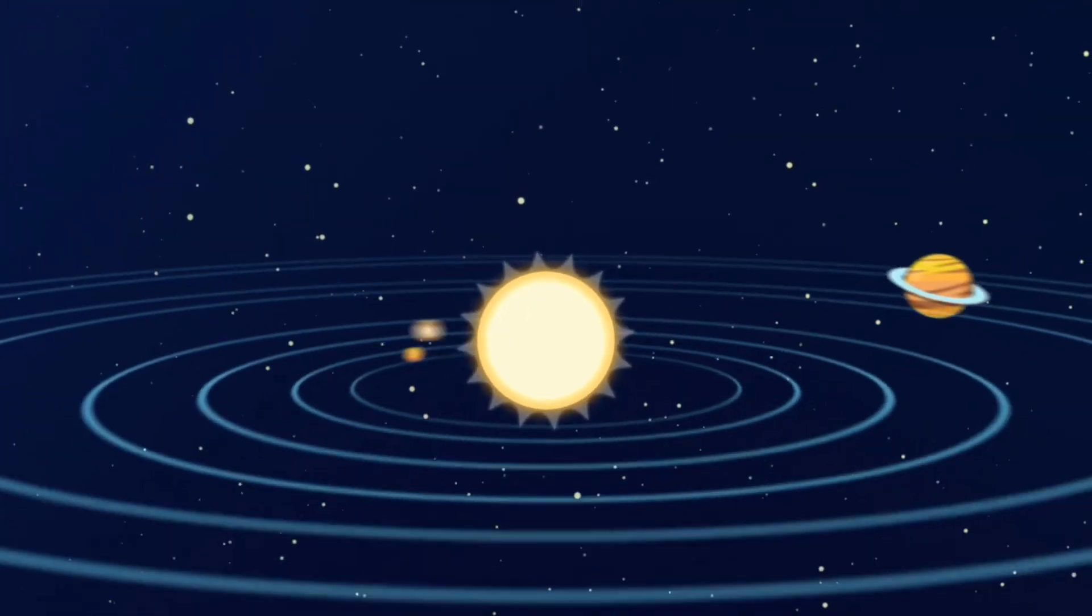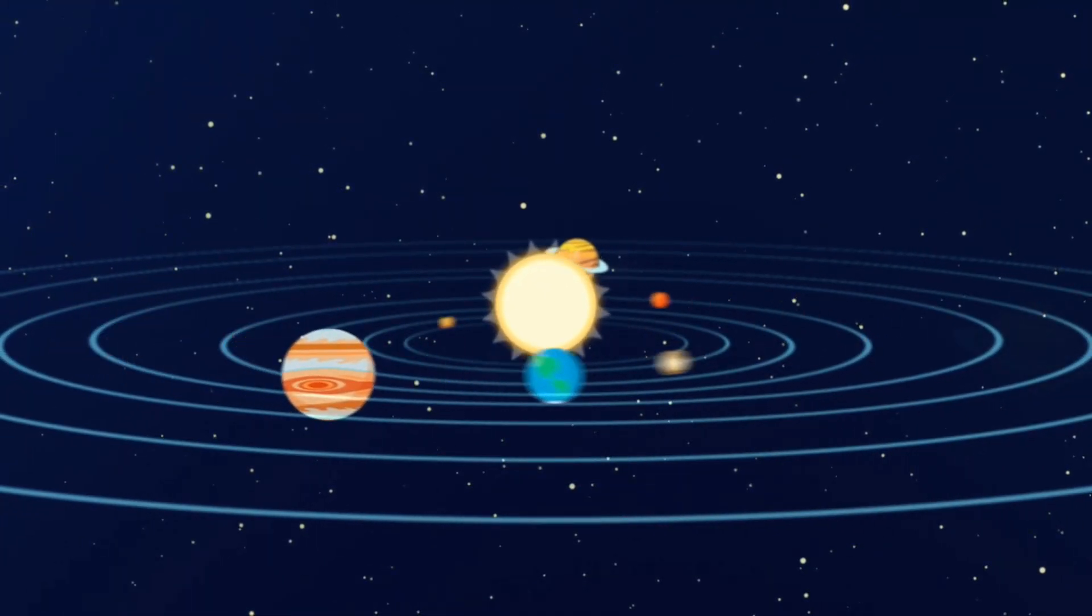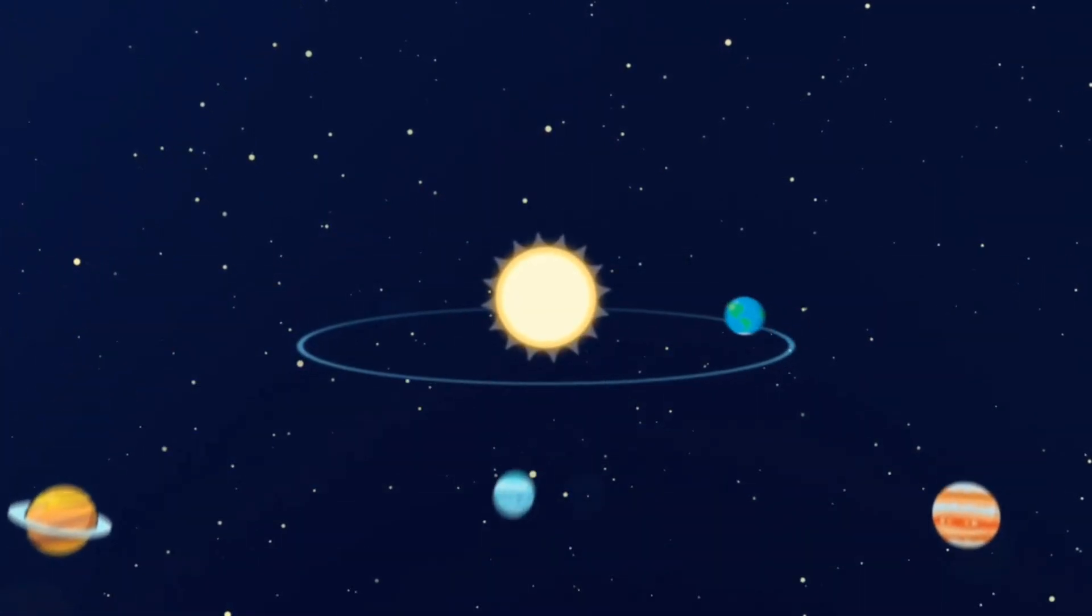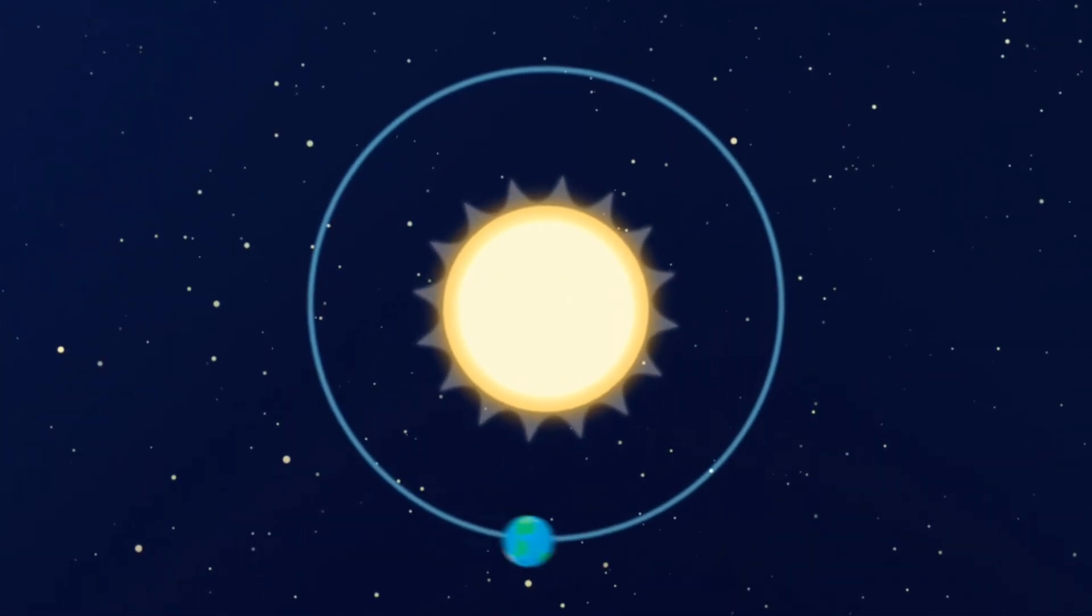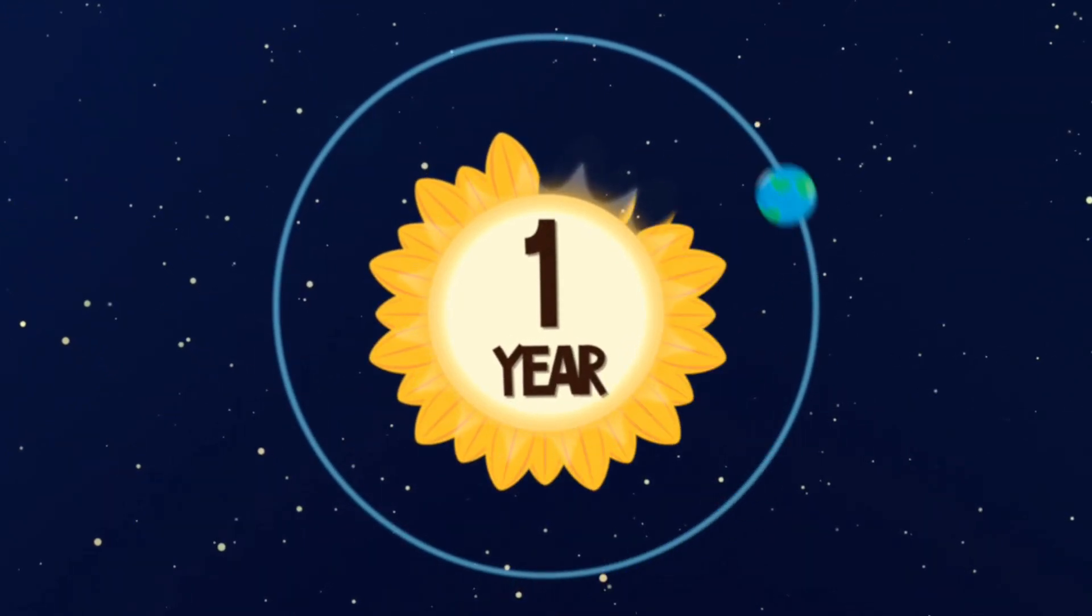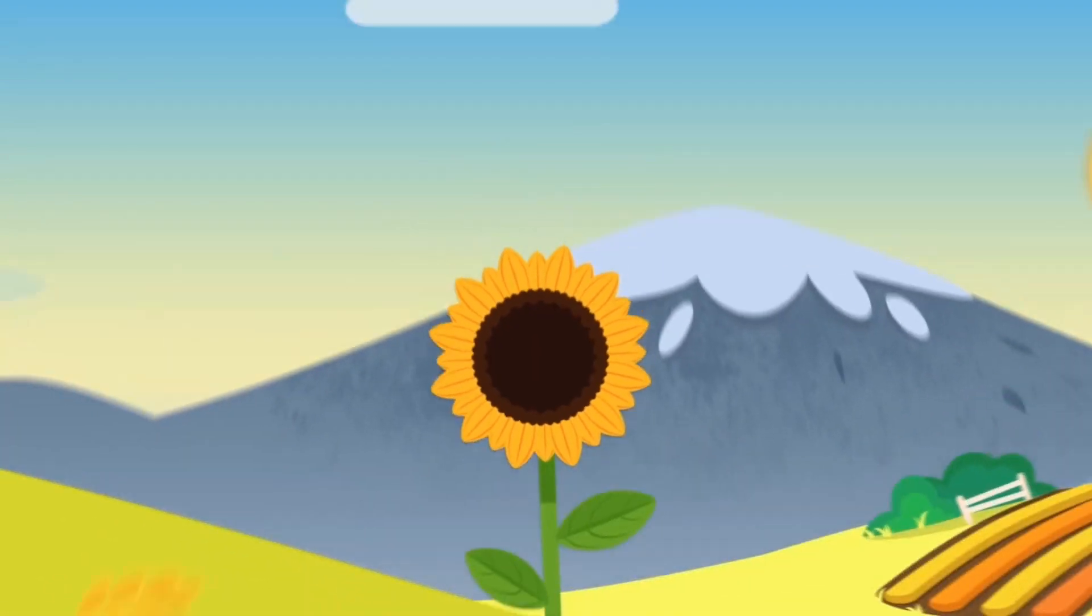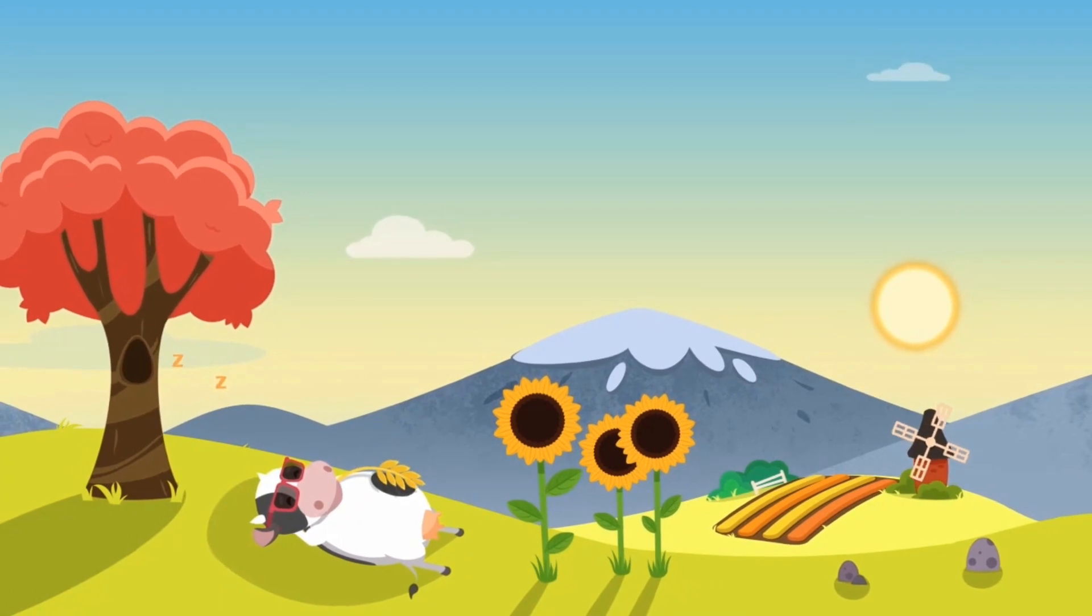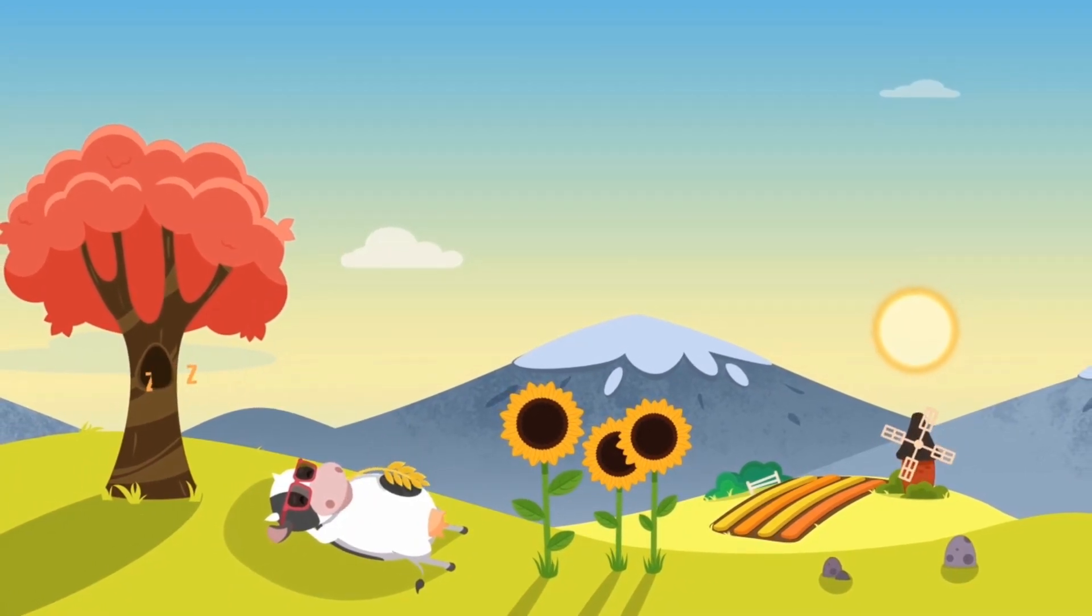Because it's so heavy, the Sun is pulling on all of the planets and is making them rotate around it. It takes our planet 365 days to make a full circle. That's one year. The Sun is the main source of energy for all life on Earth and we wouldn't be here without it.